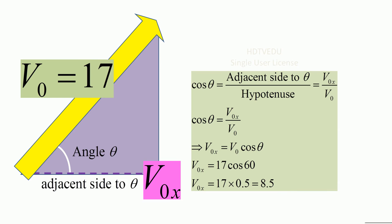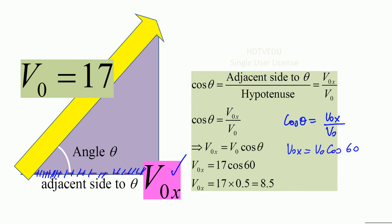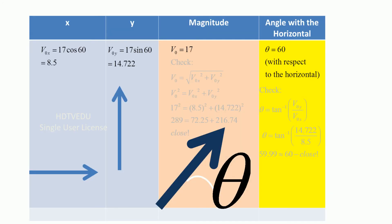Now for the adjacent side, V0x: cosine theta equals adjacent side over hypotenuse, so cosine theta equals V0x divided by V0. Cross-multiplying gives V0x equals V0 cosine theta. Theta is 60 and V0 is 17, so we compute cosine 60, and we get 8.5.